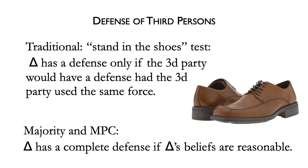If so, Bernice has a complete defense. If not, Bernice has no defense, unless the doctrine of imperfect self-defense applies. The model penal code is consistent with the majority, but mistakes are graded according to whether the mistake is reckless or negligent. An unreasonably mistaken Bernice is convictable only of criminally negligent homicide. A recklessly mistaken Bernice would be convictable of manslaughter.